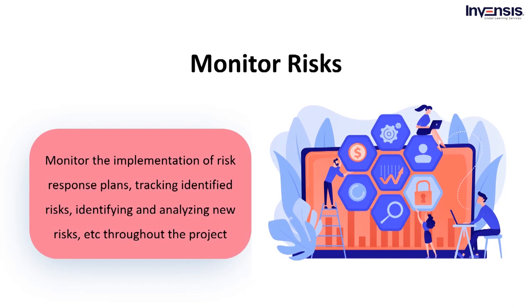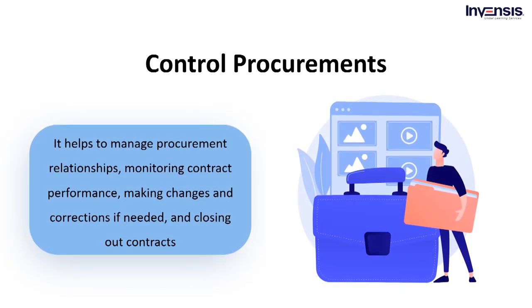The eleventh process is monitor risks. It belongs to the risk management knowledge area and is performed throughout the project. This process monitors the implementation of risk response plans and tracks identified risks, analyzes new risks, and eventually evaluates the effectiveness of the risk process. The last process is control procurements. It manages procurement relationships, monitors contract performance, makes changes and corrections as needed, and finally closes out contracts. It is performed as and when required and belongs to the procurement management knowledge area.